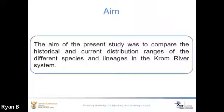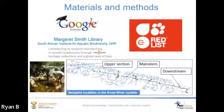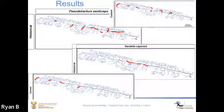The aim of the Pseudobarbus study was to compare the historical and current distribution ranges of the different species and lineages in the Gwang River system. Distribution data was collected from the Gwang River and augmented by historical data sourced from the NRF SAIAB database. Distribution maps were created to show the ranges of the species and whether they increased or decreased compared to historical distribution ranges.